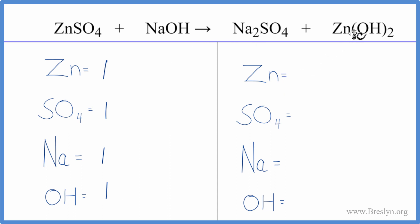On the product side, we have one zinc, one sulfate, two sodium atoms, and then one hydroxide times two. So we have two of those.